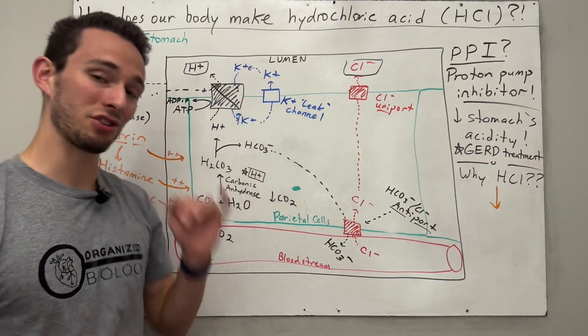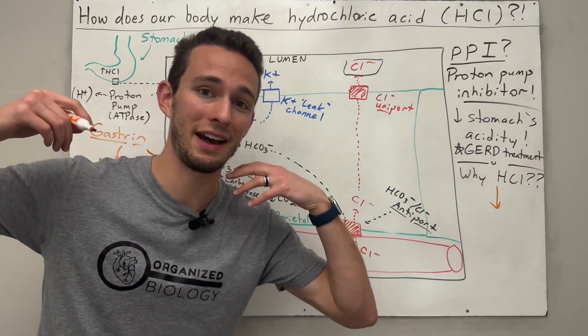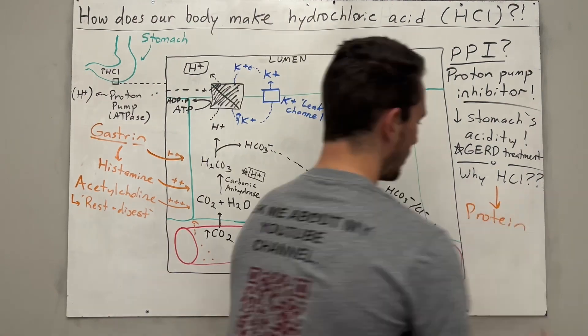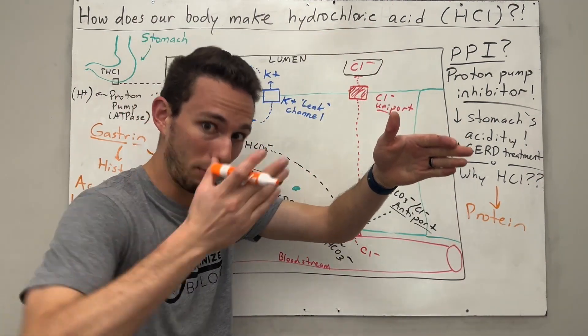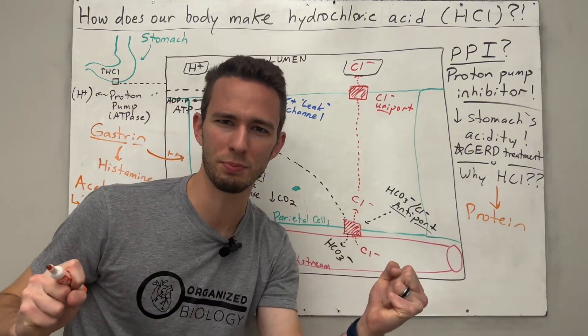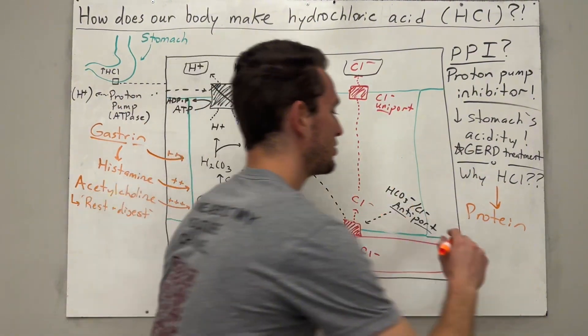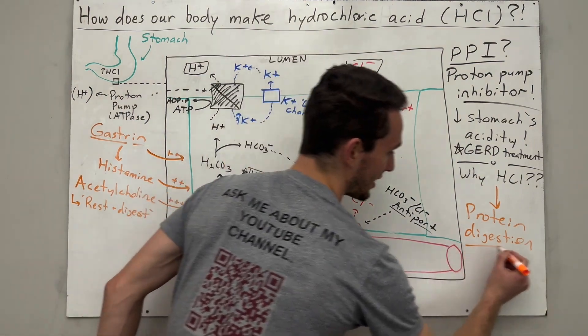Well, the reason you make acid in your stomach is because you eat foods that have a lot of protein in them. And proteins are these really big molecules that in your digestive system you have to break apart, right? And hydrochloric acid will help to unfold those proteins so that you can break them down easier. Otherwise known as protein digestion.